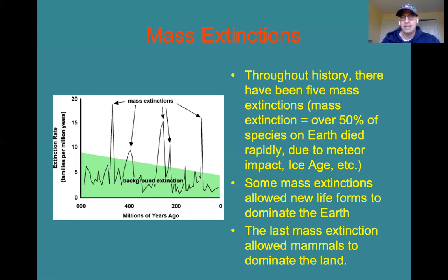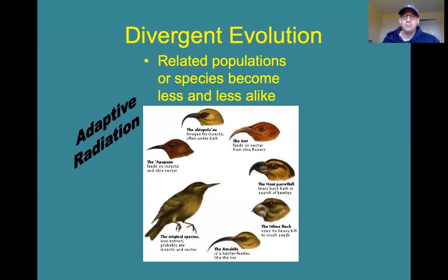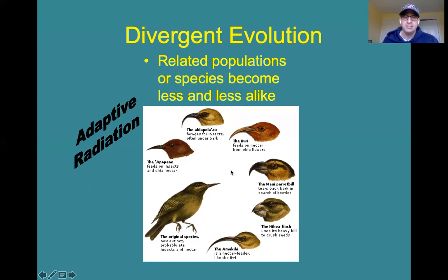Dinosaurs died out due to a meteor impact. The ice age brought about the mass extinction of over 50% of the animals on the planet at that time. What happens when there's a mass extinction is new life forms are going to start to dominate the earth — they are going to fill the niches that had been filled by the previously dominant species that are now gone. The last mass extinction 65 million years ago, when the dinosaurs were wiped out, allowed mammals to dominate the land. As a result of niches becoming open and available, what we often see is what's called adaptive radiation, where we get many new species formed from a single common ancestor — an example of divergent evolution, where related populations or species become less and less alike.